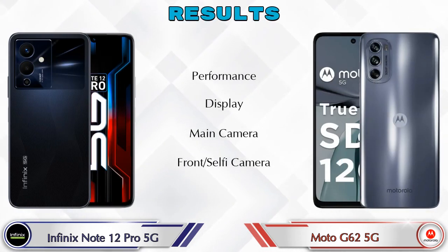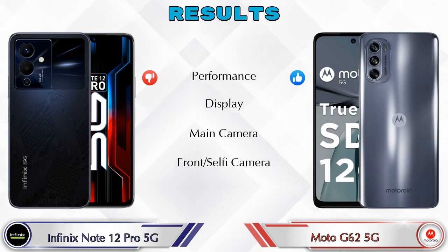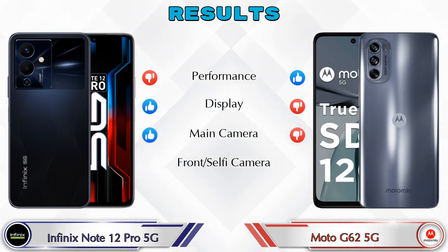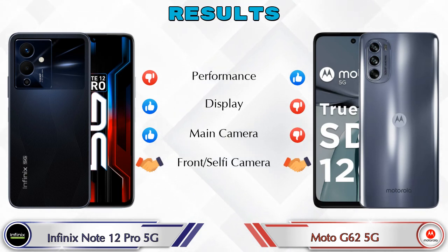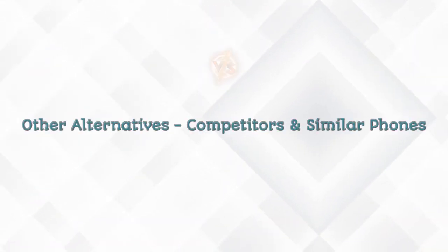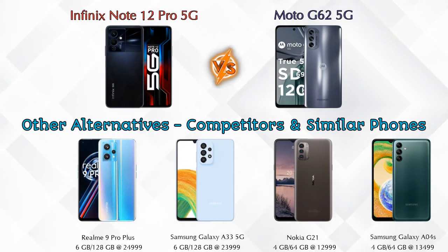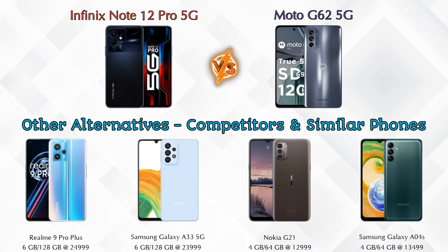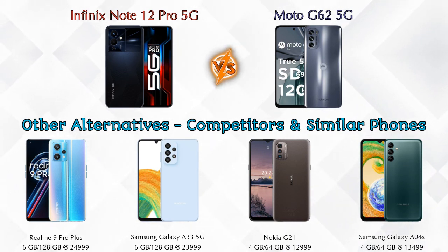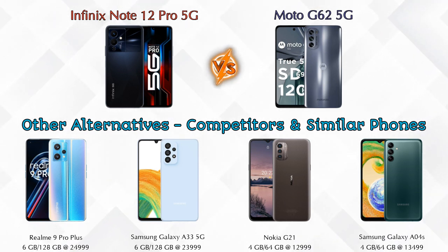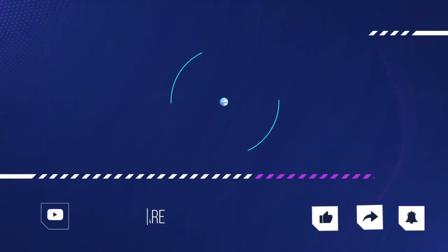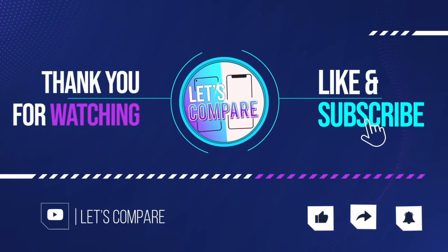Finally for the results: in performance, the Moto G62 5G is ahead; in display, the Note 12 Pro 5G is ahead; in main camera, the Note 12 Pro 5G is ahead; in front selfie camera, both phones are the same. Other competitors at the same price include the Realme 9 Pro Plus 5G, Samsung Galaxy A33 5G, Nokia G21, and Samsung Galaxy F04s. Details about all competitor phones are in the description. If you liked the video, please like and subscribe — thanks for watching!